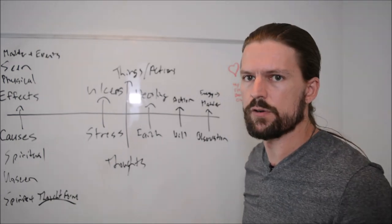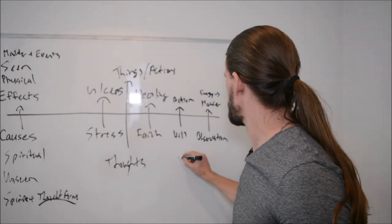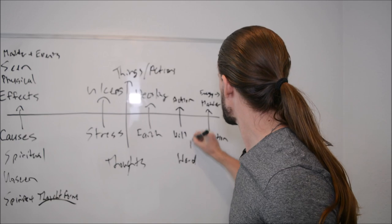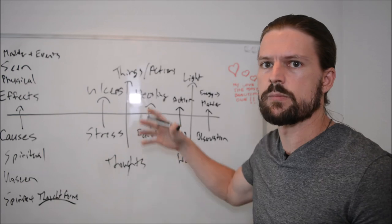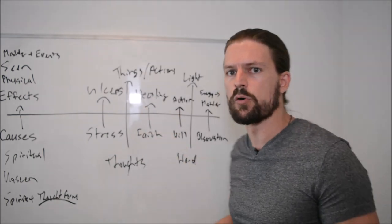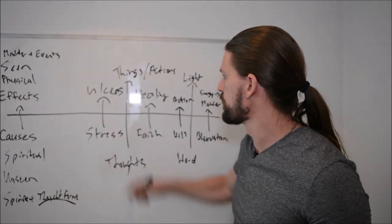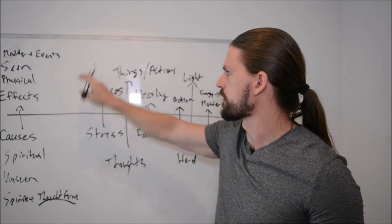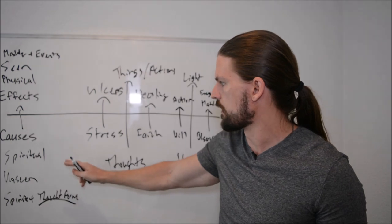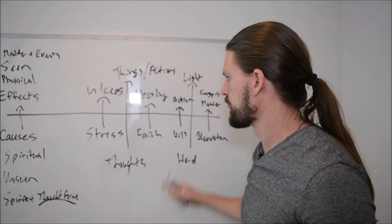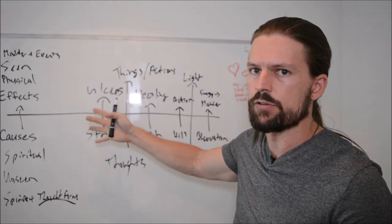Other application: when God created the universe, he said, let there be light, and there was light. So, the word of God became light, became energy, became matter, as God spoke things into existence. Well, how did God speak things into existence? Well, this is how. Because everything on the world of effects, everything, including matter, including energy, came from, initially, some cause in the world of causes. So, God's word creates the thing, creates the energy, creates the matter.